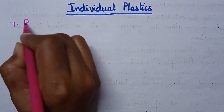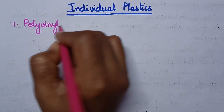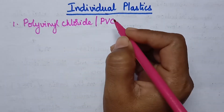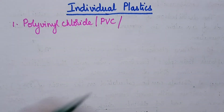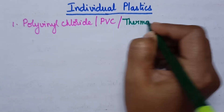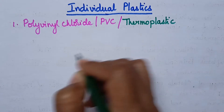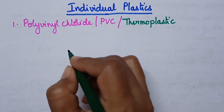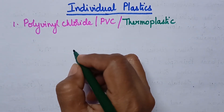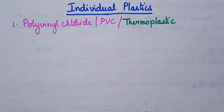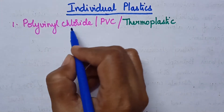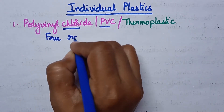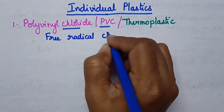Initially moving to polyvinyl chloride, it can also be called as PVC and it is a thermoplastic. Polyvinyl chloride is a thermoplastic and hence it can be prepared through addition polymerization. Addition polymerization is also called as chain polymerization and in particular, this polyvinyl chloride is prepared from free radical chain polymerization.